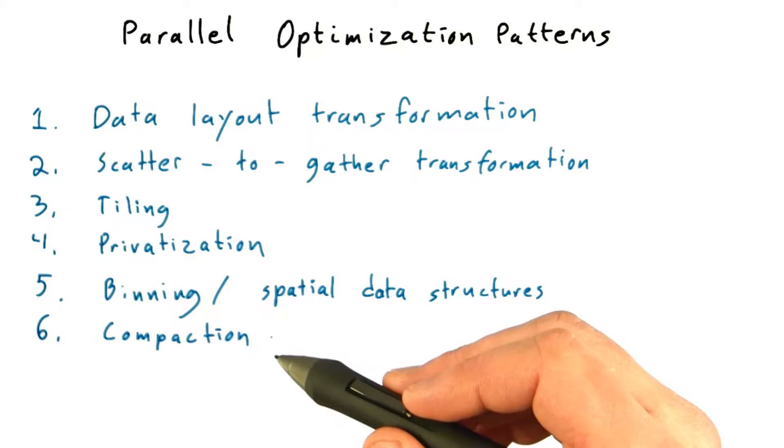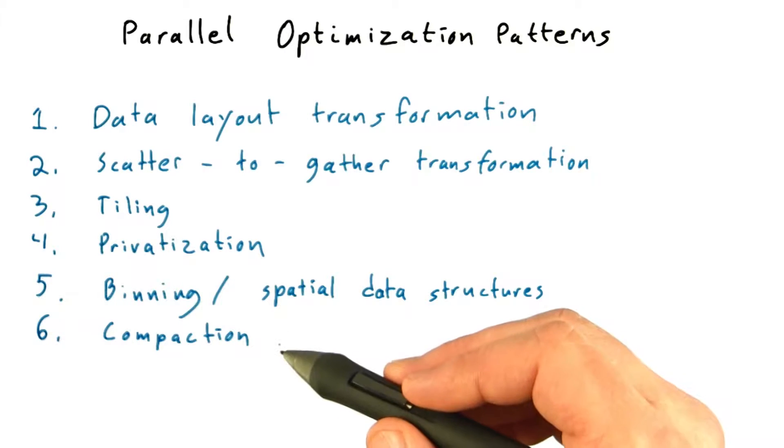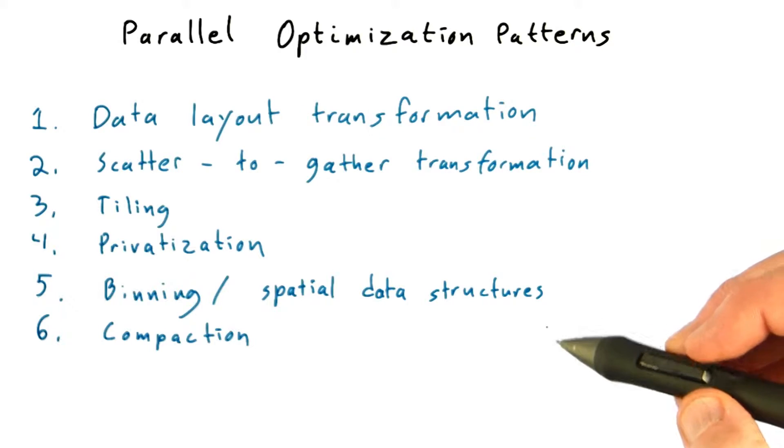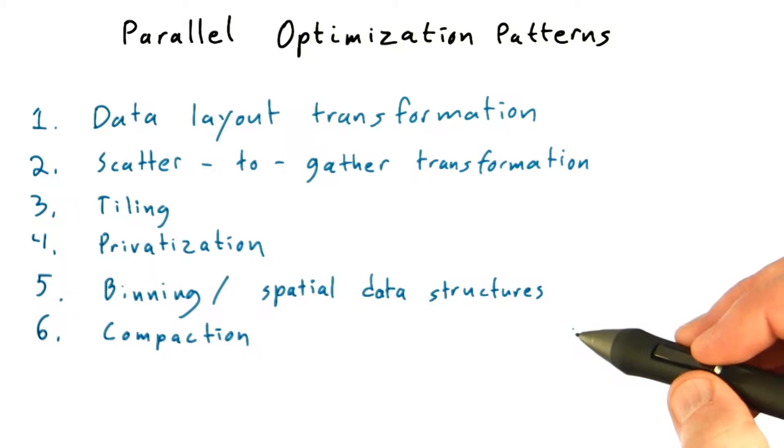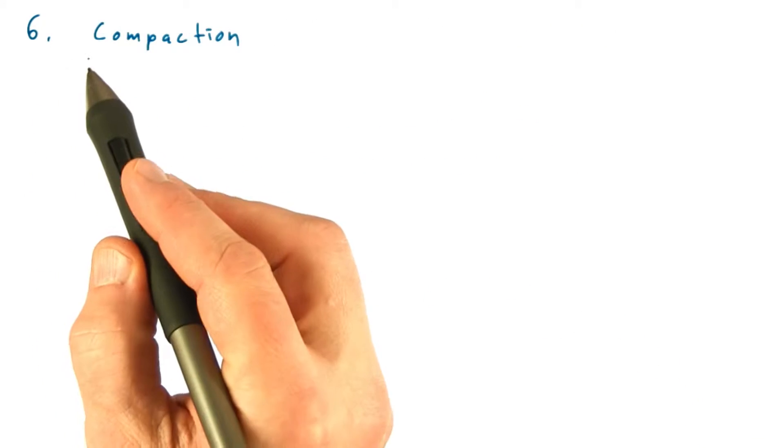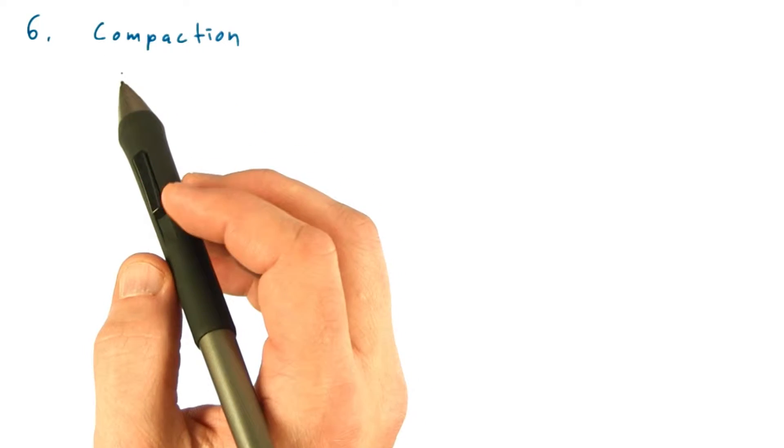The Stratton taxonomy's sixth optimization technique is called compaction. John has described compaction a couple of times - in unit four and revisited in unit six, where it comes up in sparse matrix vector multiply and graph traversal. I'm not going to go into great lengths describing what compaction is.